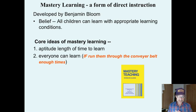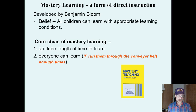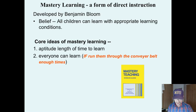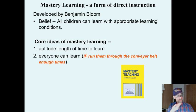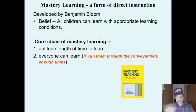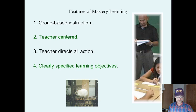With Mastery Learning, students' aptitude is determined by the length of time it takes them to learn, meaning that everyone can learn if you run them through the conveyor belt enough times. A student with great aptitude goes through once. Students with less learning aptitude go through the conveyor belt several times.